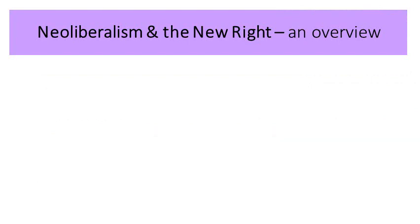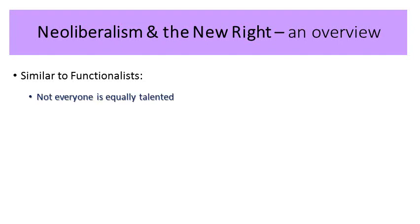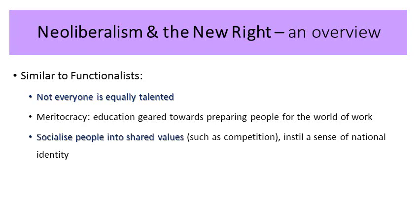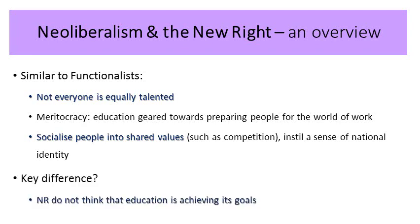Let's look at some neoliberal and new right arguments — a quick overview. They are quite similar to functionalists; I always think of neoliberals and the new right as almost extreme functionalists. They would argue that not everyone is equally talented, they believe in meritocracy, that education should be geared towards preparing people for the world of work, and that education is good at socialising people into shared values such as competition and instilling a sense of national identity. The key difference is that the neoliberal and the new right do not think that education is achieving its goals — they are worried that it is underperforming.